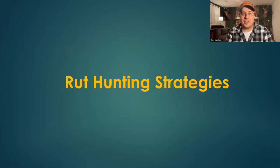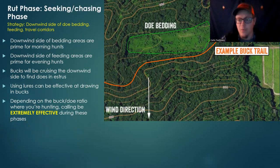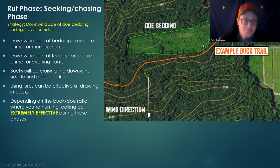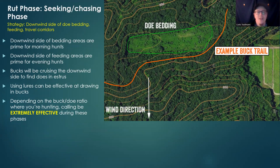Now we'll get into actual strategies. One of the best things you can do during the seeking and chasing phases is to position yourself on the downwind side of a doe bedding area, because that's a quick way for a roaming buck to scent-check the area.